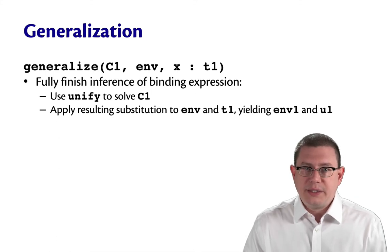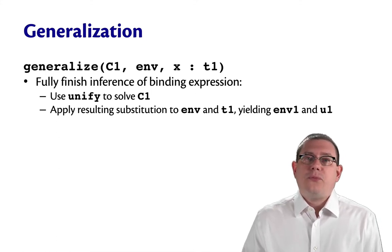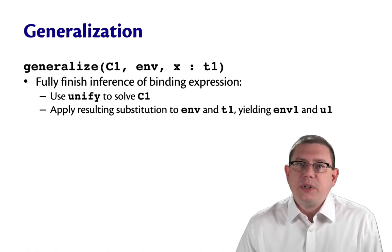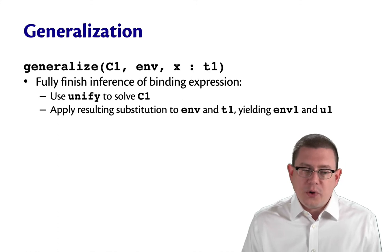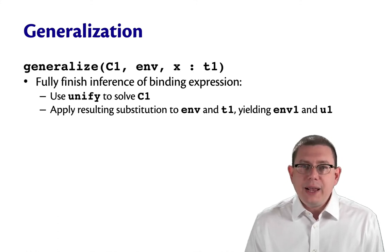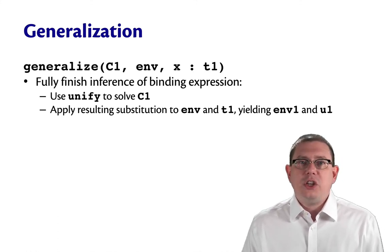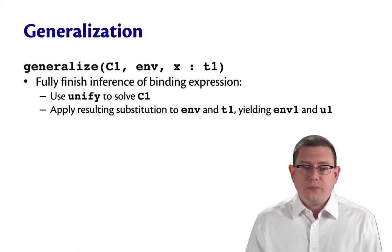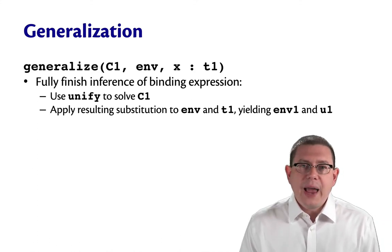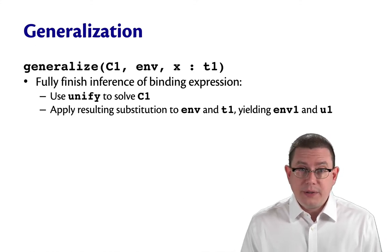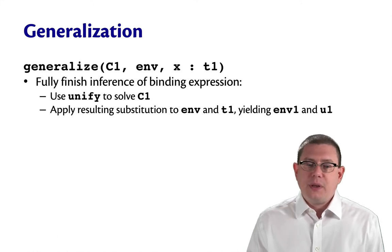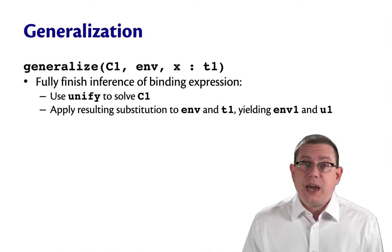Here's what generalize does. It fully finishes inference of that binding expression. So we're going to stop here, we're not going to worry about the rest of the program for a minute. We're going to take that constraint set C1 and unify it. That'll get us a substitution. We then apply that substitution to the environment. So we're sort of mining that substitution for all the information we can get from it. We also apply it to the type T1.